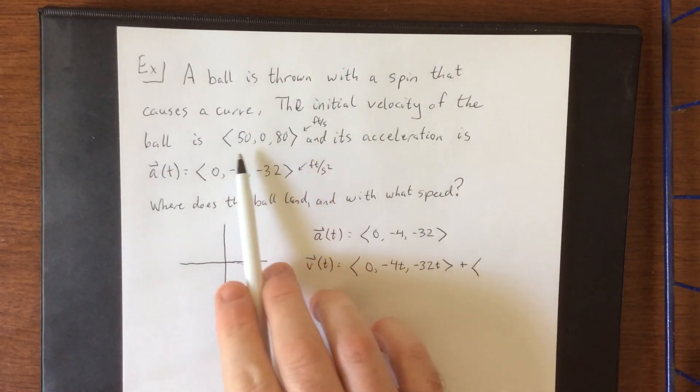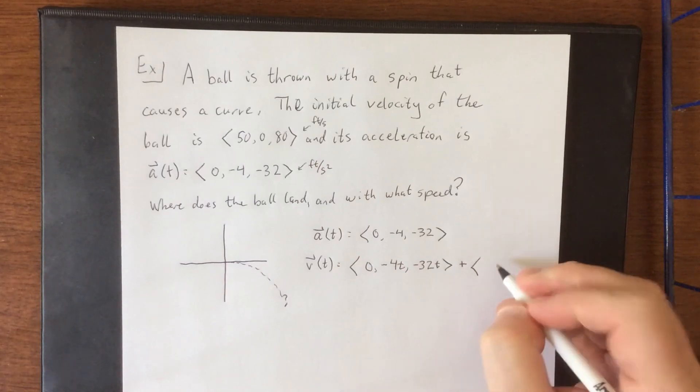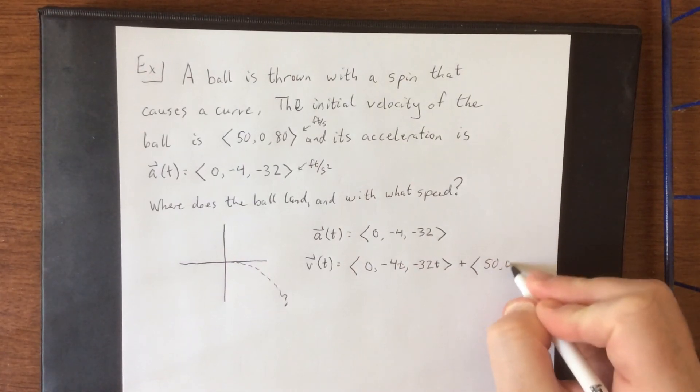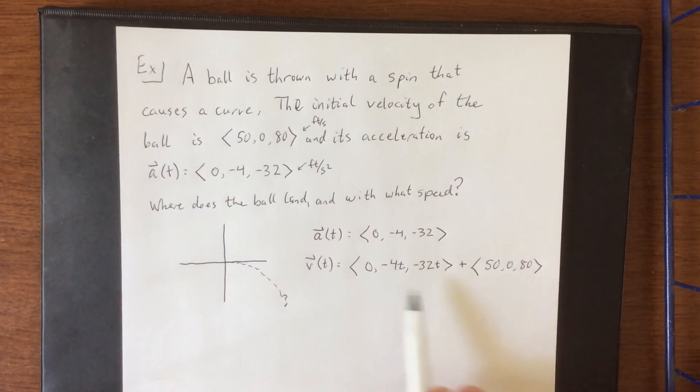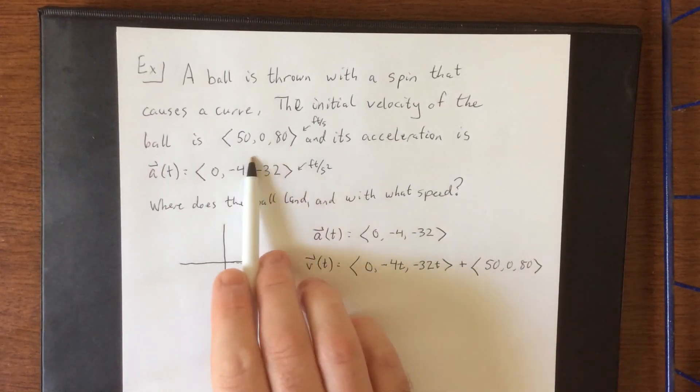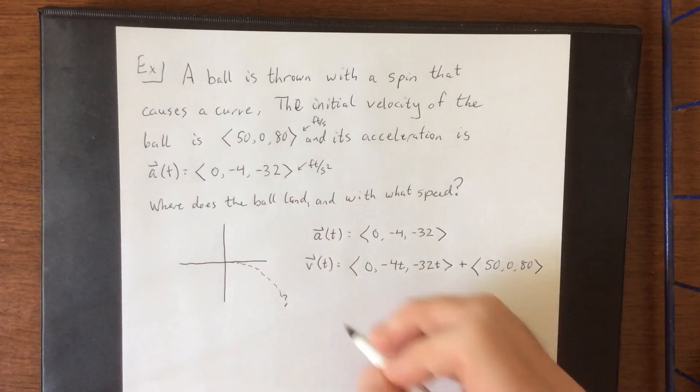In this case, initial velocity is given as <50, 0, 80>. Now the reason that this works out is because if I were to plug in t equals 0 here, we would have simply the zero vector. So we would need to add to that <50, 0, 80> to come up with this initial velocity.